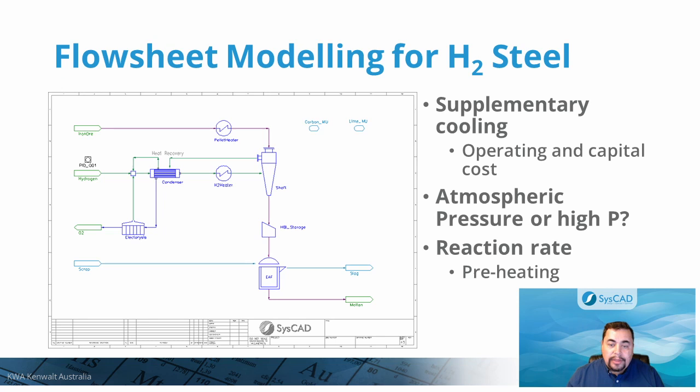Separate to this are the capital costs for the substantial heat exchanger that would be needed. For the purpose of this model, we assume we are operating at close to atmospheric pressure. One further complexity, which we ignore, is the reaction rate, which will have an implication in the shaft size, diameter, and volume, which must allow sufficient residence time for the feed ore to react to equilibrium at the shaft discharge.